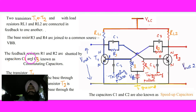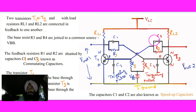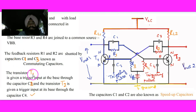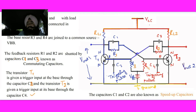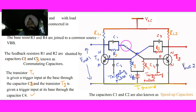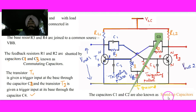C1 and C3 are known as the commutating capacitors, also called speed-up capacitors, and they serve a specific purpose. A triggering pulse can be applied to T1 through capacitor C2, and a triggering pulse can be applied to the base of T2 through capacitor C4.